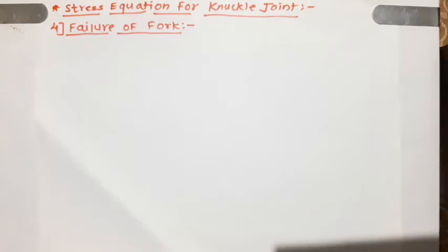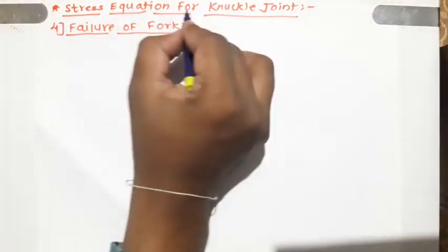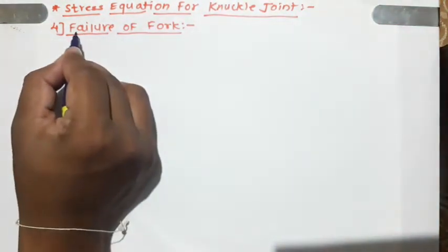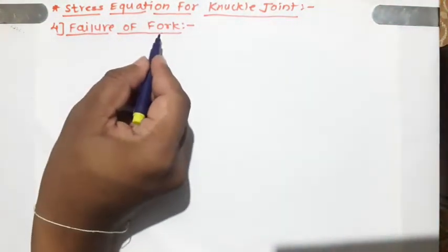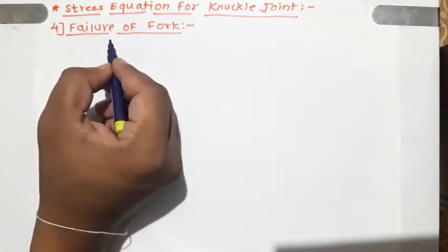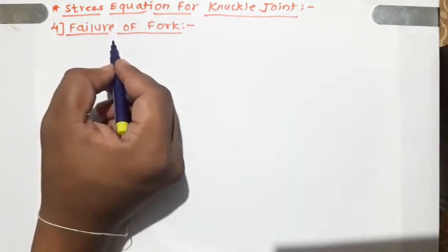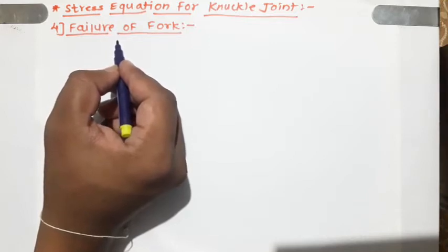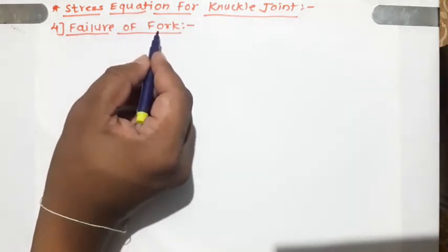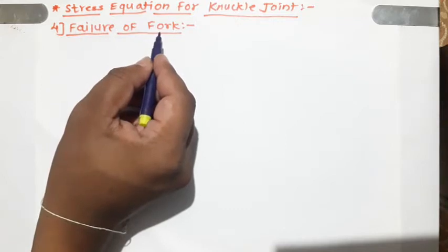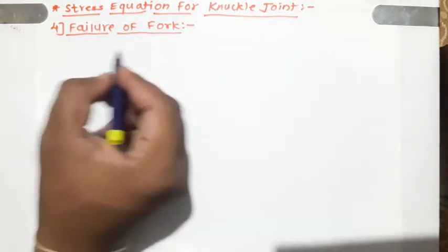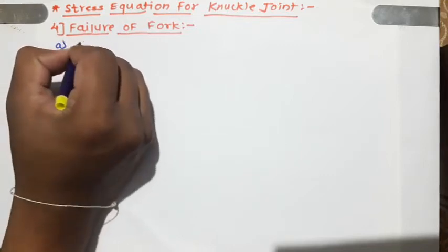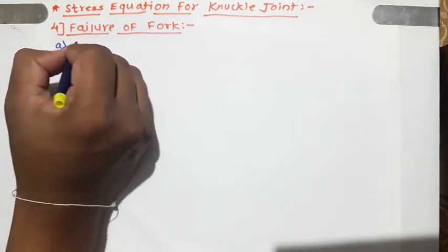Welcome to this video on stress equations for the knuckle joint. In this video, I'm going to talk about the failure of the fork. As we have seen in the case of failure of the eye, the eye failed under tensile stress and shear stress. Similarly, this fork will also fail in tensile stress or shear stress. First, let us consider the tensile failure of the fork.